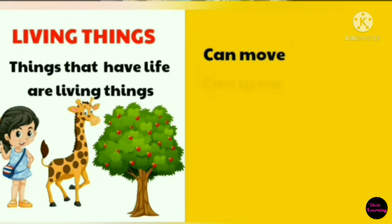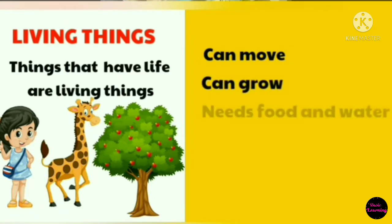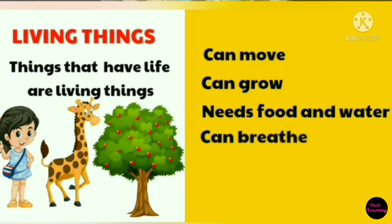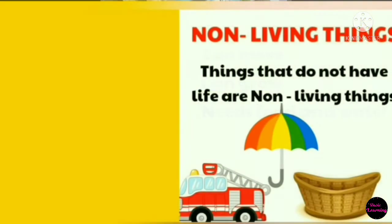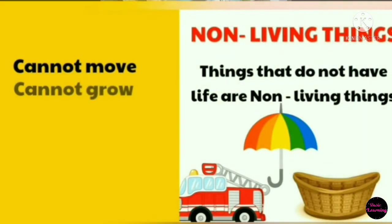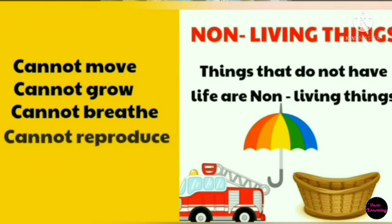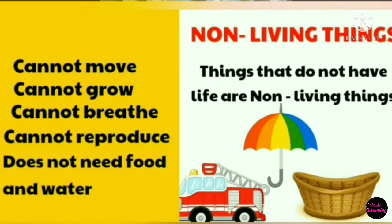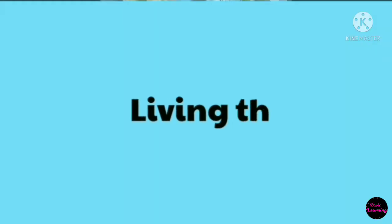Living things can move, grow, they need food and water, they can breathe, they can reproduce, and they also respond to environment change. While non-living things cannot move, cannot grow, cannot breathe, cannot reproduce, and do not need food.